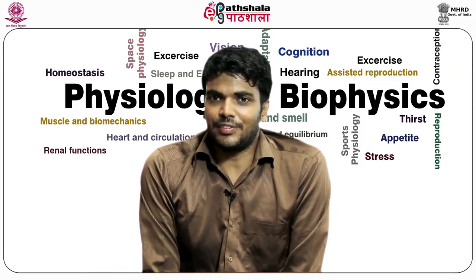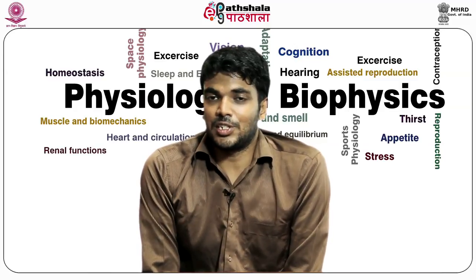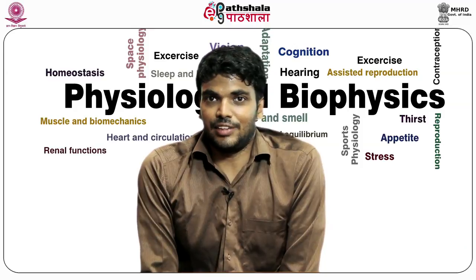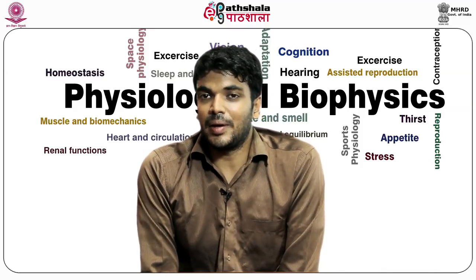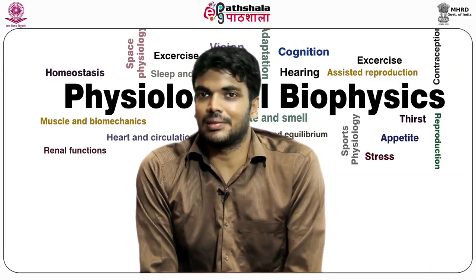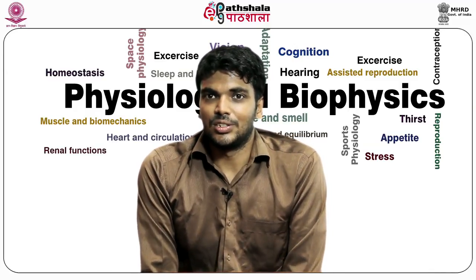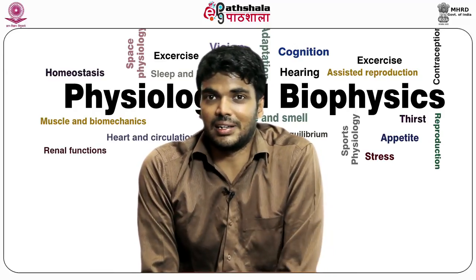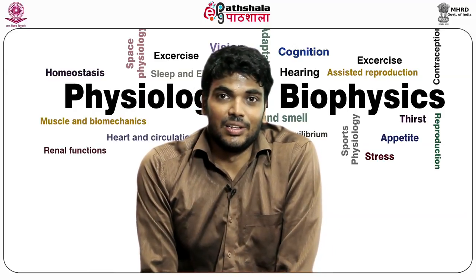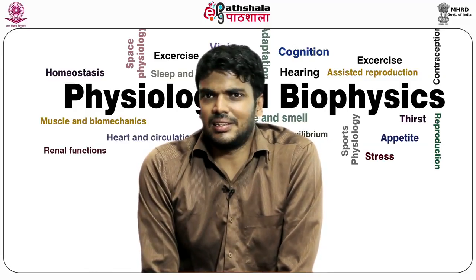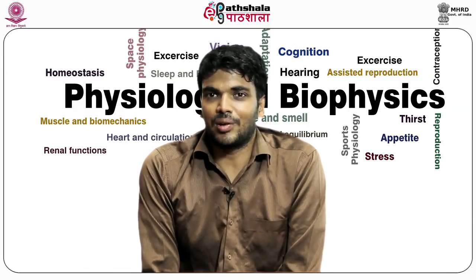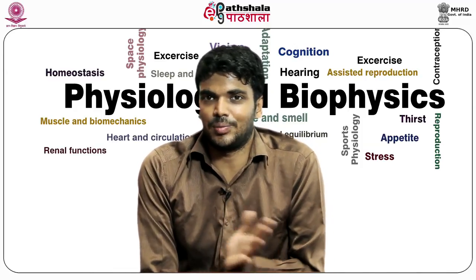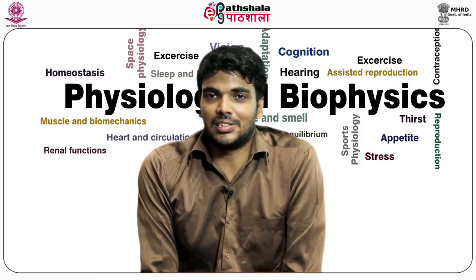In vestibular ataxia, contributions from both ears are received. If one vestibule is damaged, there is an imbalance in inputs reaching the brainstem centers, associated with dizziness and a sensation of uncontrollable rotation. If both vestibules are damaged, ataxia does not occur since there is no imbalance. It is the imbalance between inputs from both sides that leads to the sensation of vertigo.